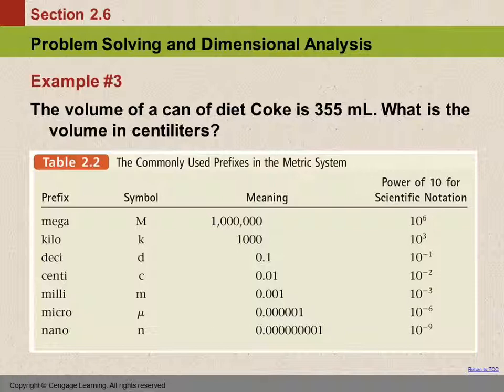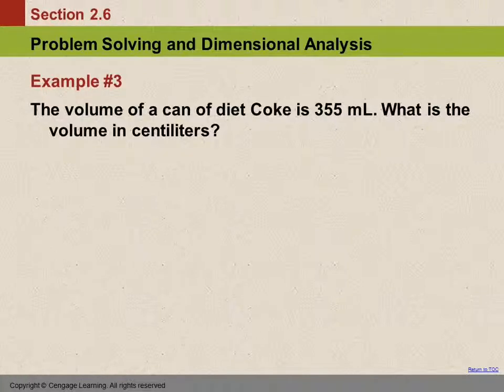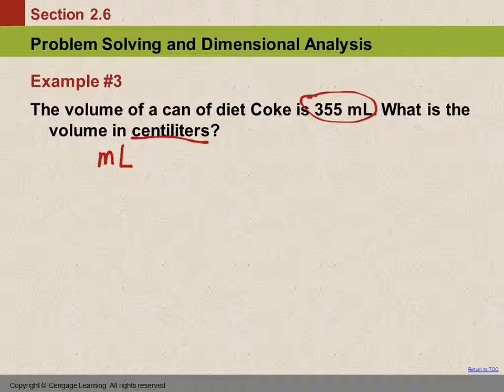So, centi has the abbreviation C, it means 0.01 or 10 to the minus 2. Milli means 10 to the minus 3. Problem-solving strategies: we always read through the whole problem, and then we're going to pick out the numbers. We just have one number in the problem, 355 milliliters. So we're starting with milliliters. And then, what's the question? What's the volume in centiliters? That's what we need to find out.